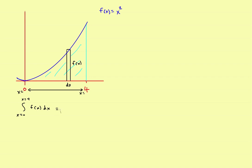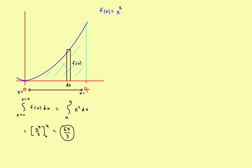In this particular problem, it would be from 0 to 4 of x squared dx. Finding that antiderivative gives x cubed divided by 3, evaluated from 0 to 4. If you evaluate that, you get 64 thirds — and that is the lightly shaded blue area between the curve and the x-axis, with everything in terms of x.